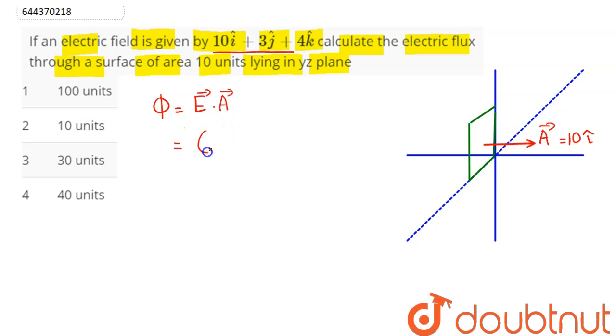Now electric field here is given as 10i cap plus 3j cap plus 4k cap, dot A vector here is 10i cap.